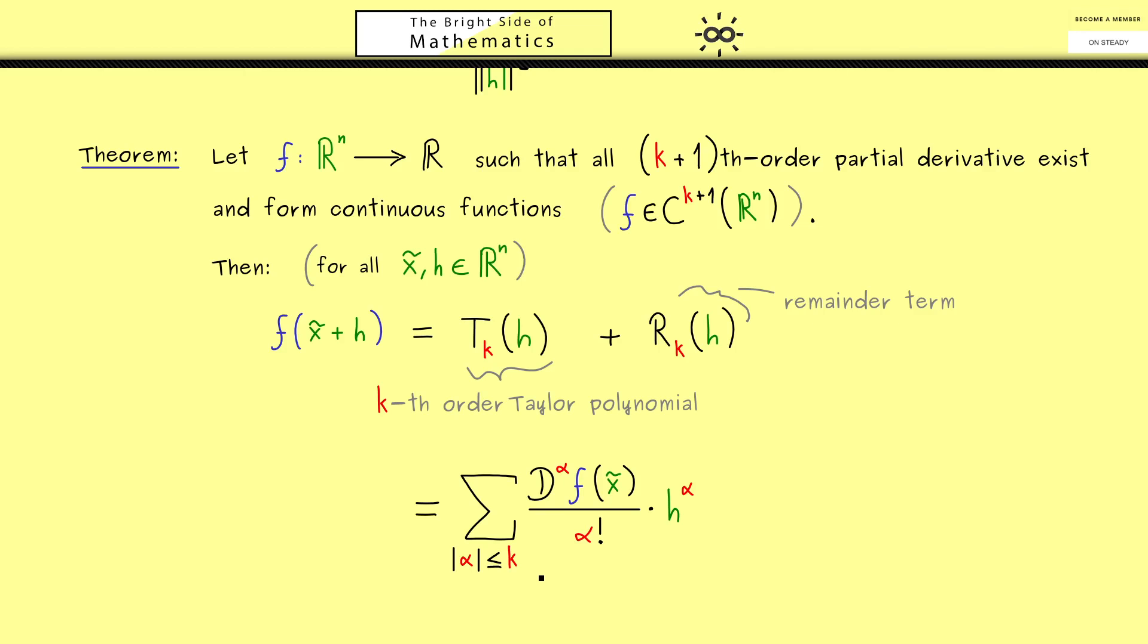Ok, there we have it, you see, this is the definition of the Taylor polynomial of the kth order. Hence you see, the only thing missing now would be a nice formula for the remainder term.